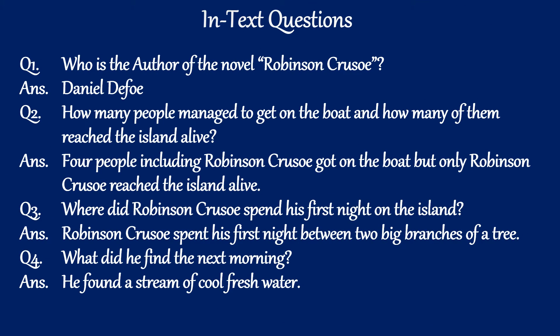Now there are some general questions found during reading of the text. Question one: Who is the author of the novel Robinson Crusoe? Answer: Daniel Defoe. Question two: How many people managed to get on the boat and how many of them reached the island alive? Answer: Four people including Robinson Crusoe got on the boat, but only Robinson Crusoe reached the island alive.